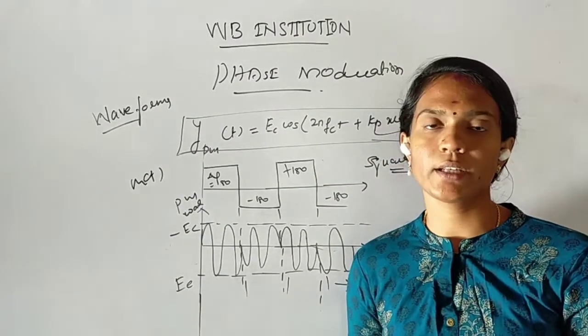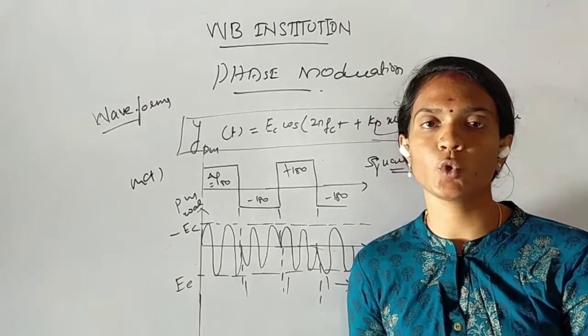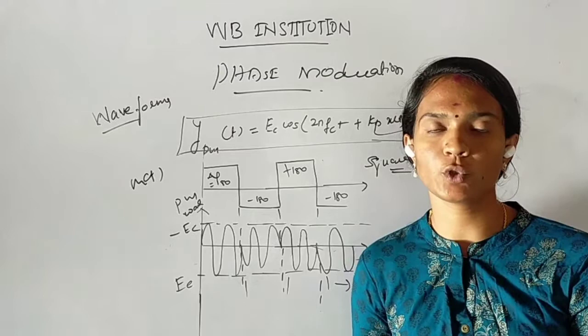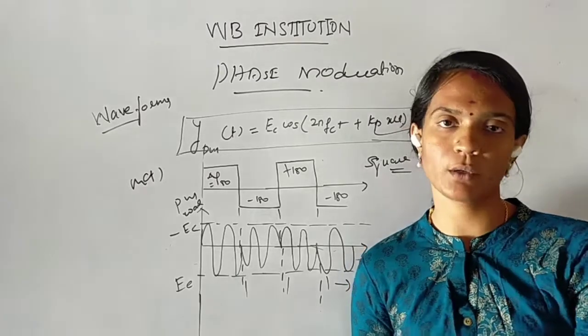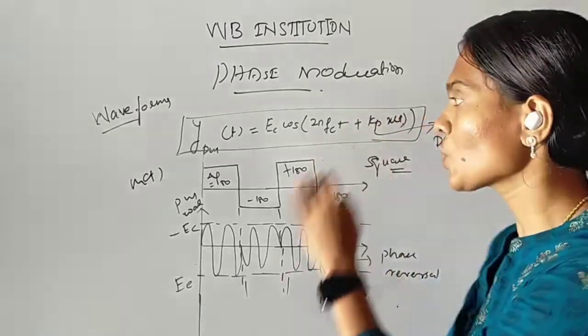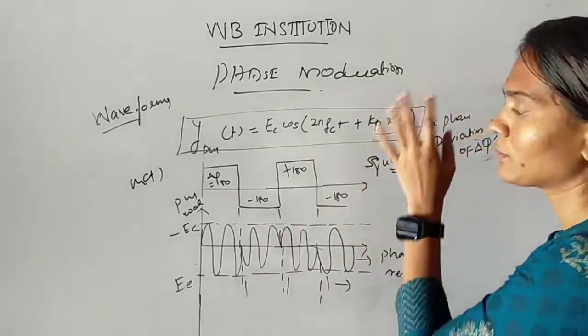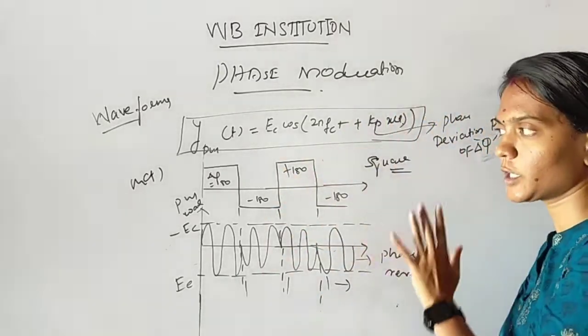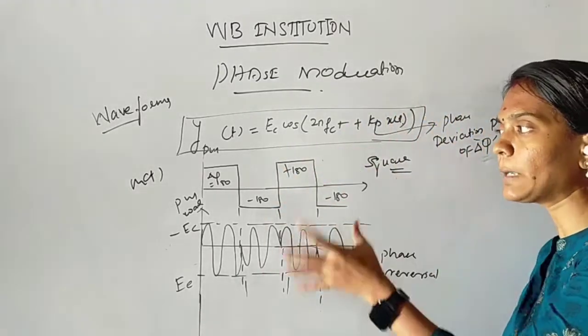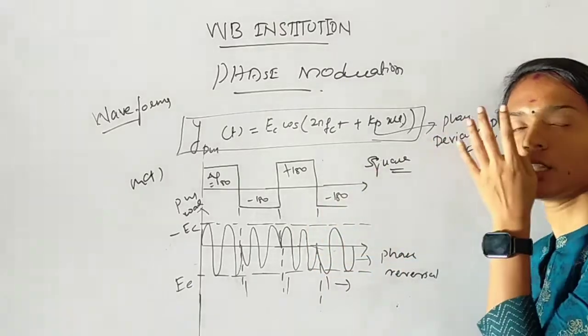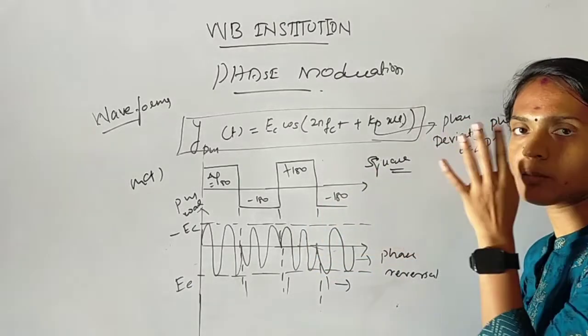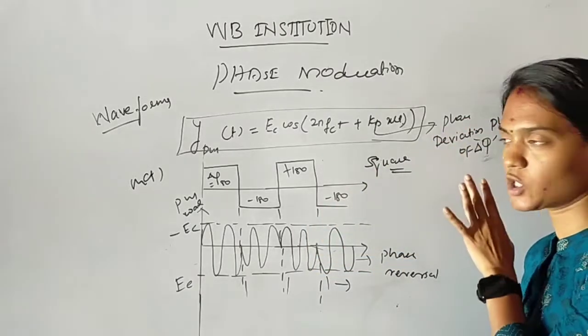Next, we look at phase modulation waveforms — both sine waveforms and square waveforms. For a square wave as the modulating signal, the waveform behavior is different from the sine wave case.